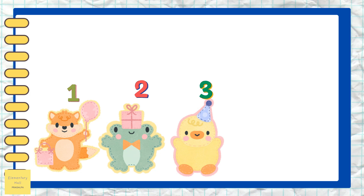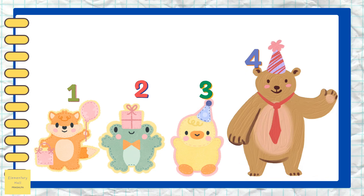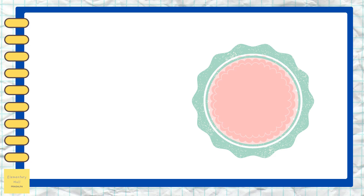There are three friends and him, so we have to divide the cake into four equal pieces. First, we will cut the cake in half from the center. Further, we need to slice the cake vertically, like a standing line. Now we have two big pieces.